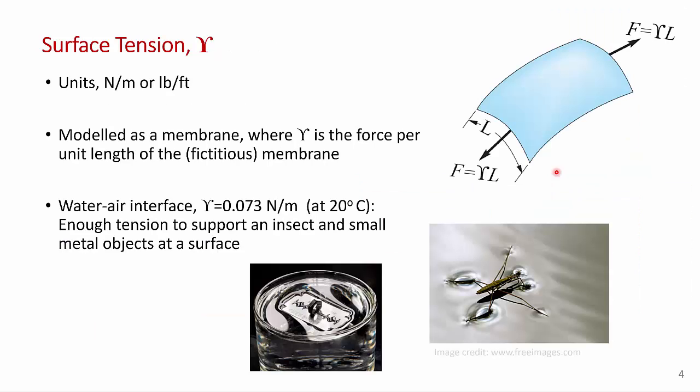But even though a surface membrane doesn't exist, it can be modeled mathematically as an elastic membrane, as I've shown over here. So surface tension has the units of newtons per meter or pounds per foot. This is the force per unit length of the fictitious membrane. And I've drawn a small section of the liquid surface here. The force needed to hold that surface in place is the surface tension times the length, epsilon times L. Now, at a water-air interface, the surface tension is about 70 millinewtons per meter. That's a small force, but it's enough to support the weight of a water strider insect, or a small metal object, at the interface.